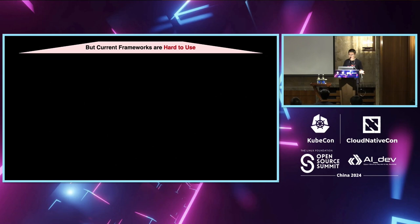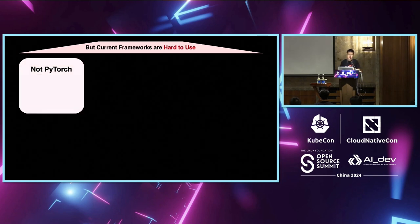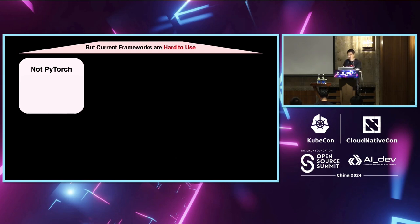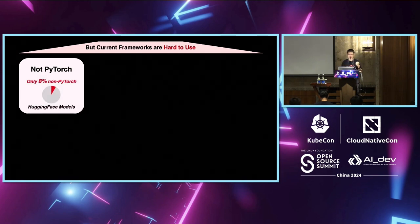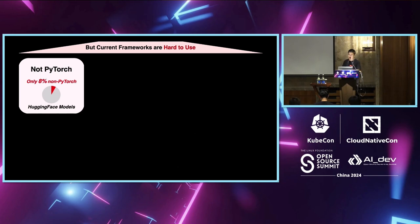Why are current frameworks hard to use? We summarized five challenges with the old frameworks. The first is that some of them are not PyTorch-enough — they don't support PyTorch models. We need PyTorch support because most models in the open source community, and inside TikTok, are in PyTorch. TensorFlow and JAX cannot handle these models.